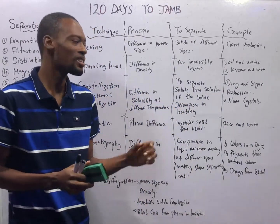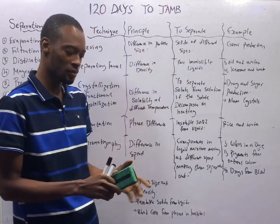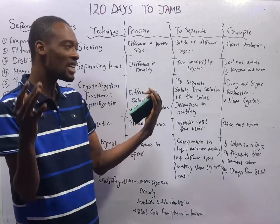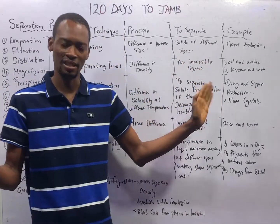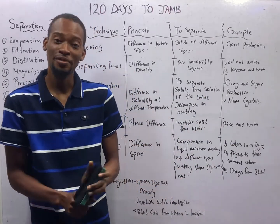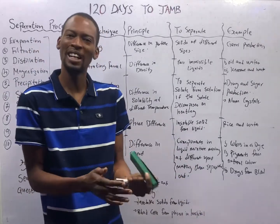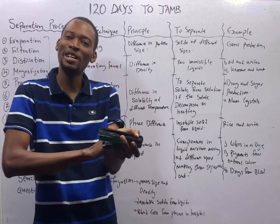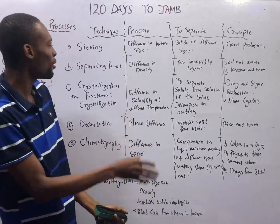Sieving is a separation technique based on the principle of difference in particle size. When you have a mixture containing particles of different sizes, we use sieving to separate them. It is used to separate solids of different sizes. For example, garri production in Nigeria — as you fry garri, the particles come out in different sizes: big, smaller, and fine. To separate them, you simply employ sieving.